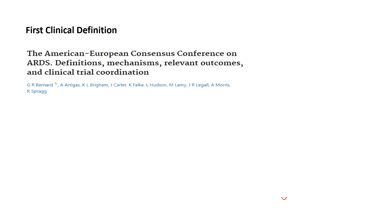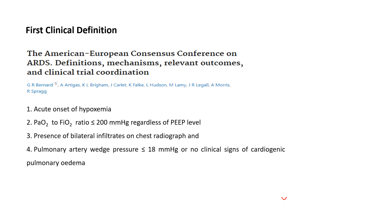The first clinical definition of acute respiratory distress syndrome was published by Bernard et al. in 1994 after the American-European Consensus Conference on ARDS. It defined ARDS on the basis of: acute onset of hypoxemia, PF ratio less than or equal to 200 mmHg regardless of PEEP level, presence of bilateral infiltrates on chest X-ray, and pulmonary artery wedge pressure less than or equal to 18 mmHg or no clinical sign of cardiogenic pulmonary edema.